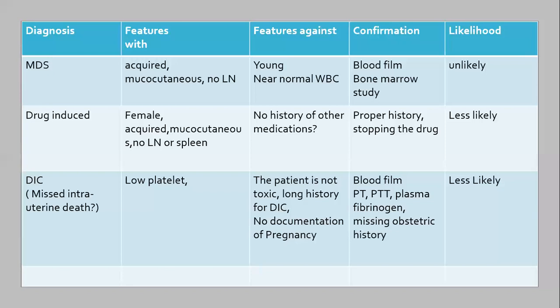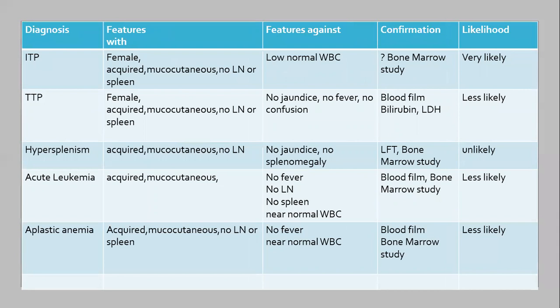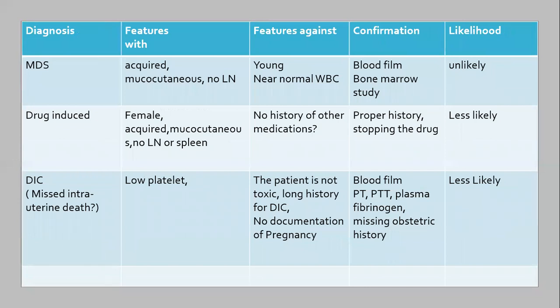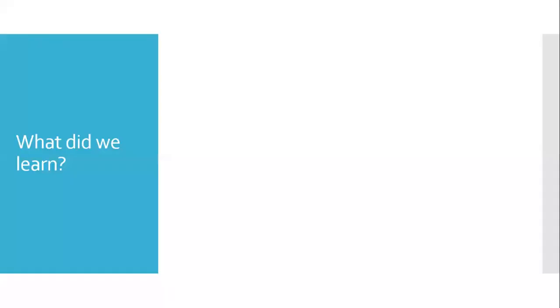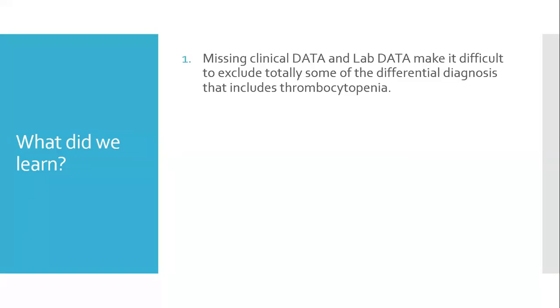The likelihood of DIC is less likely. Moving forward, ITP is the most likely diagnosis. The other conditions are less likely but cannot be excluded — except for hypersplenism, because the patient does not have splenomegaly, and myelodysplastic syndrome, which is unlikely at this age.